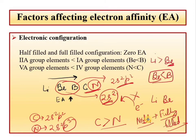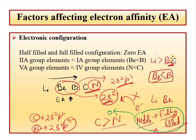Similarly, noble gases have fully filled configurations in all their orbitals. Although according to the periodic trend, being on the extreme right side should mean the highest electron affinity, this does not happen because their configuration is fully filled. Therefore, noble gases do not accept electrons, and their electron affinity is zero.